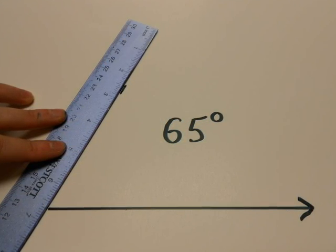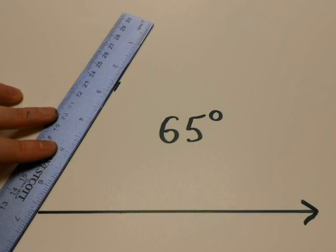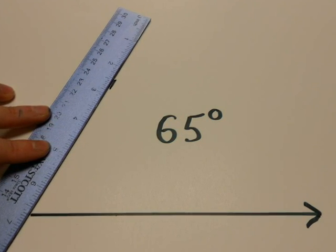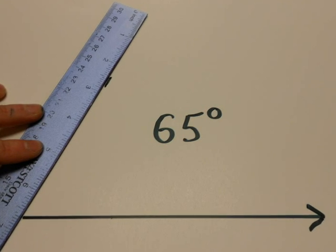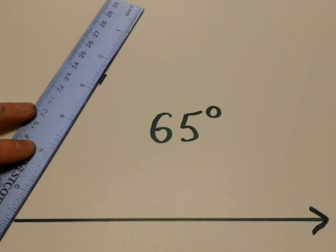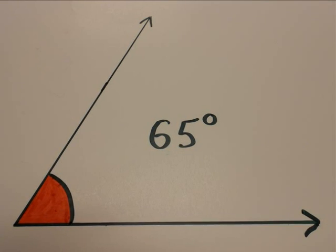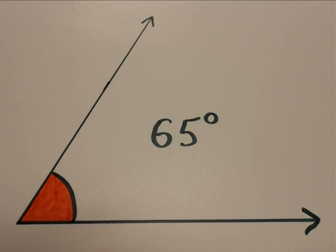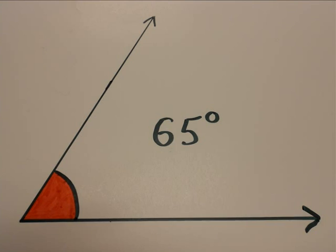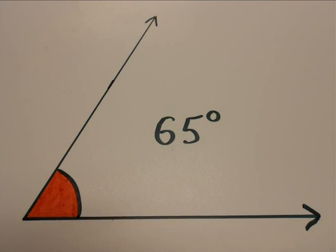Now it's time to grab a ruler. Simply line the ruler up with the little mark that we made in the previous step, with the beginning of the ray. Let's take a peek at what our next ray should look like. As you can see here, I have drawn a ray that also begins where the original ray began. This angle has a measurement of 65 degrees.